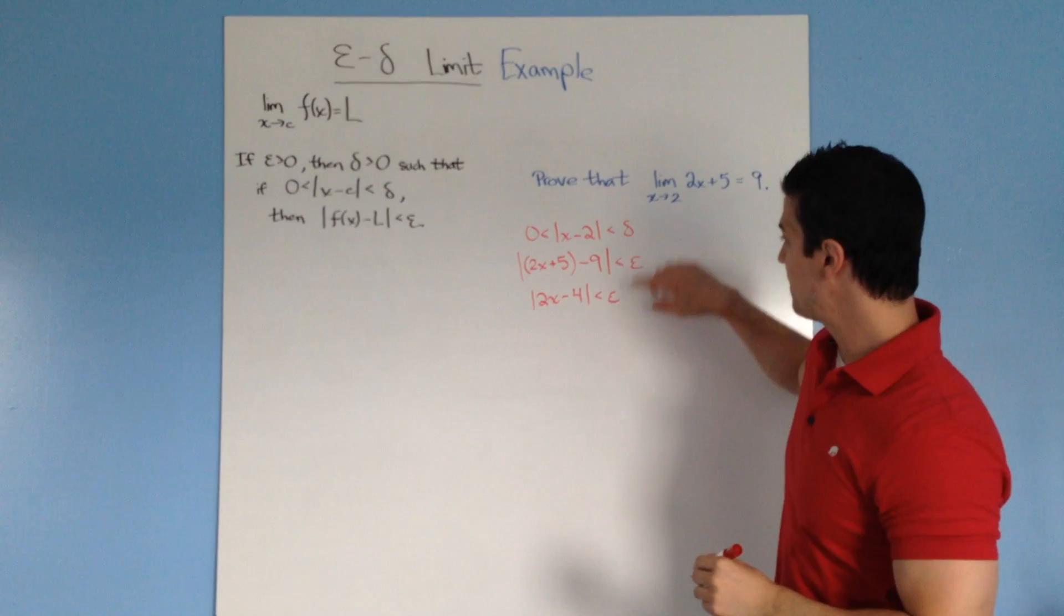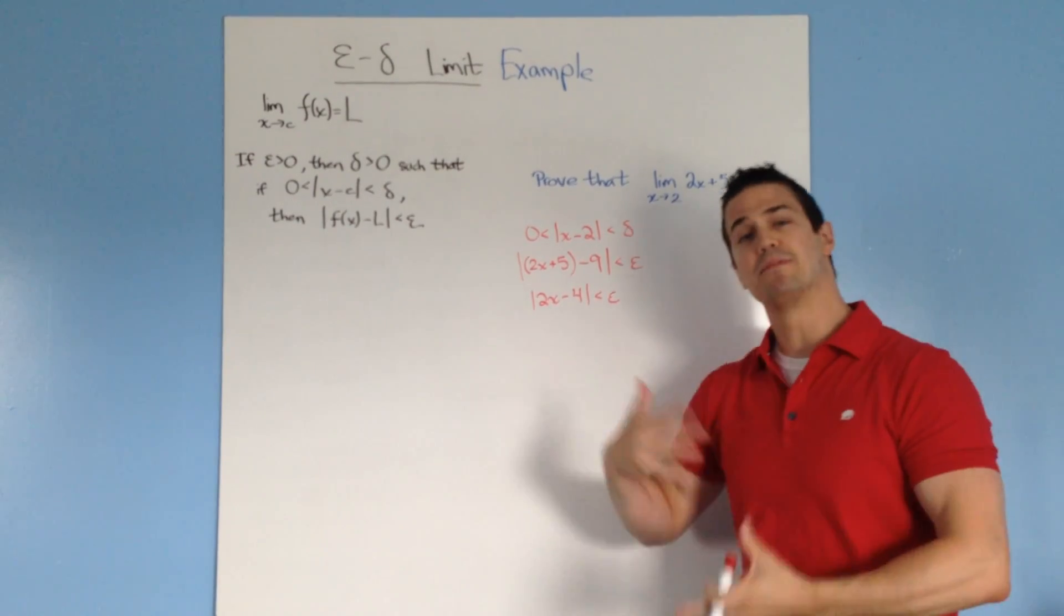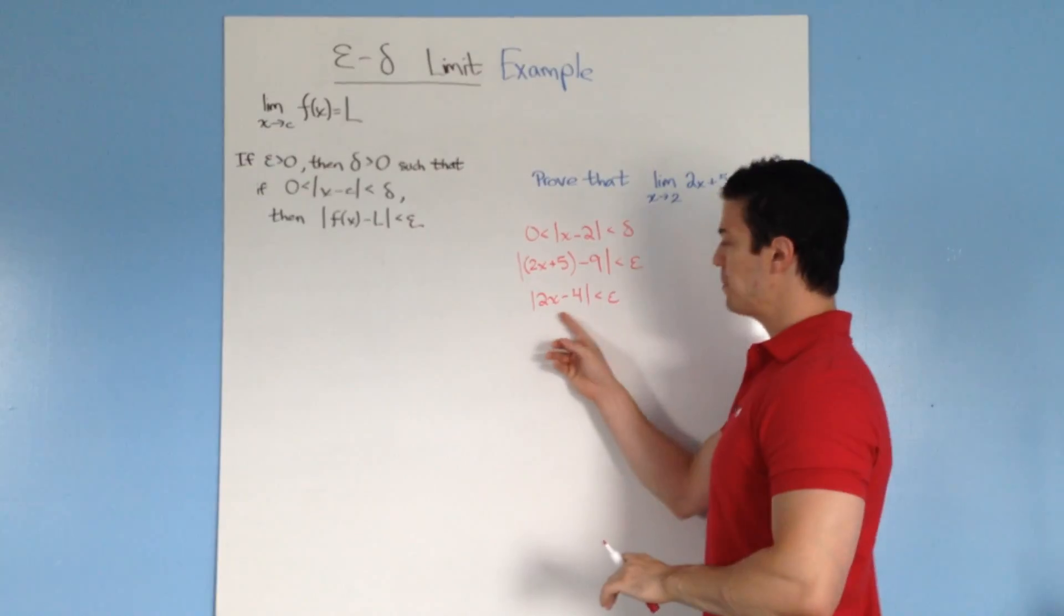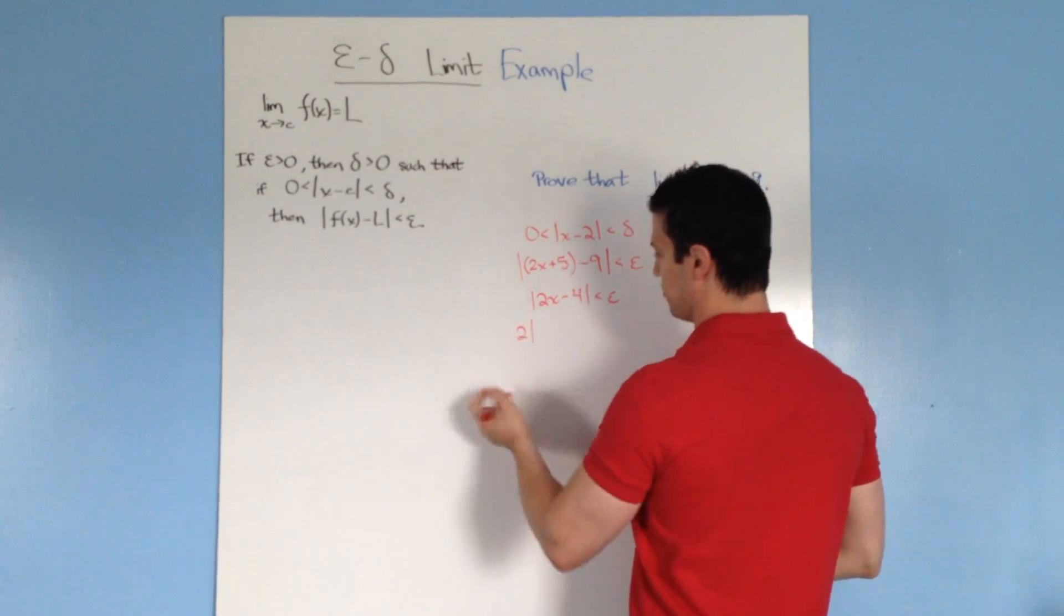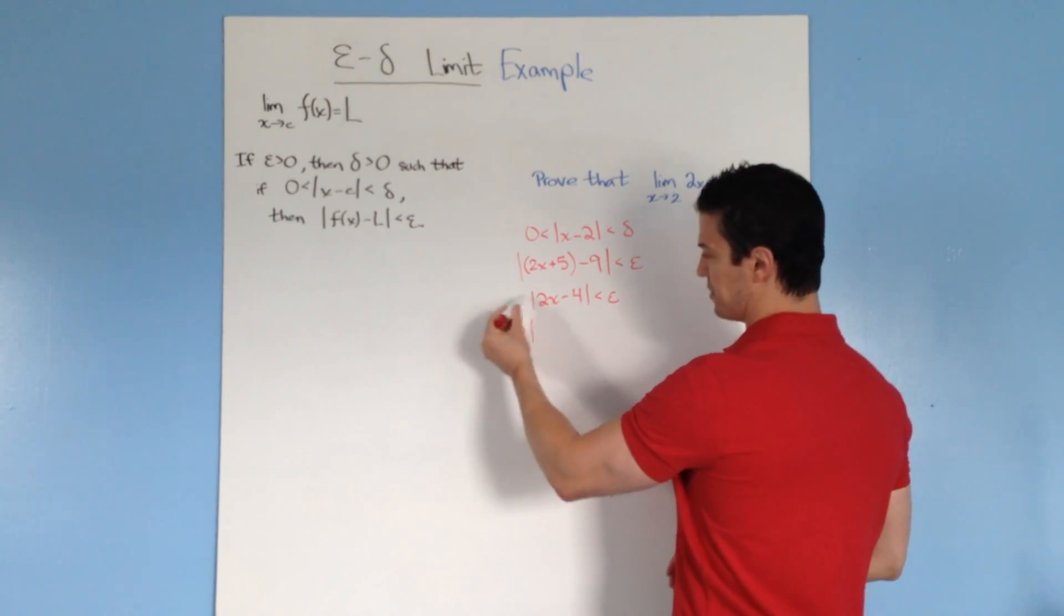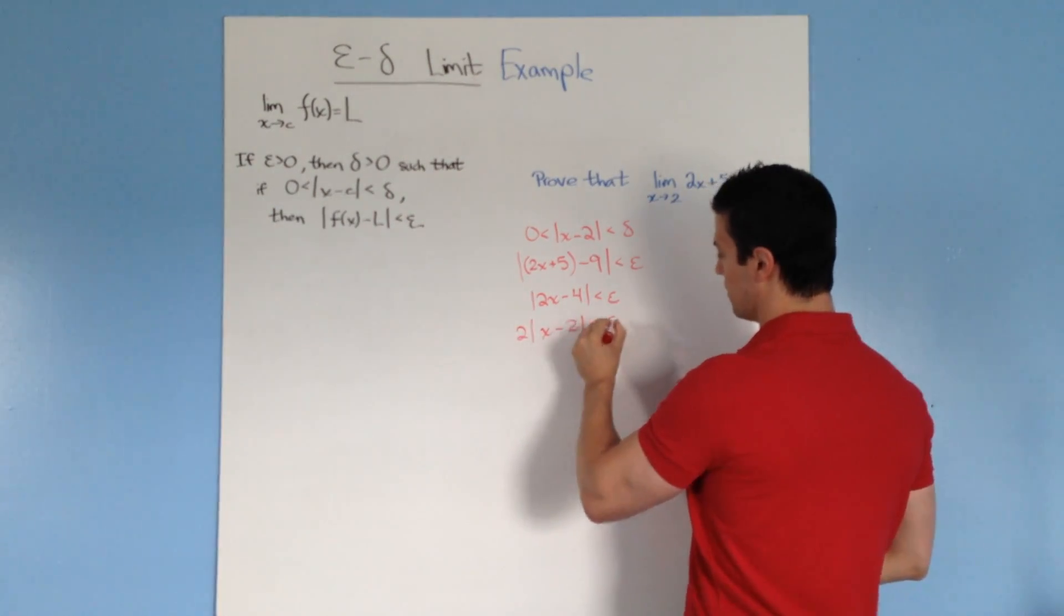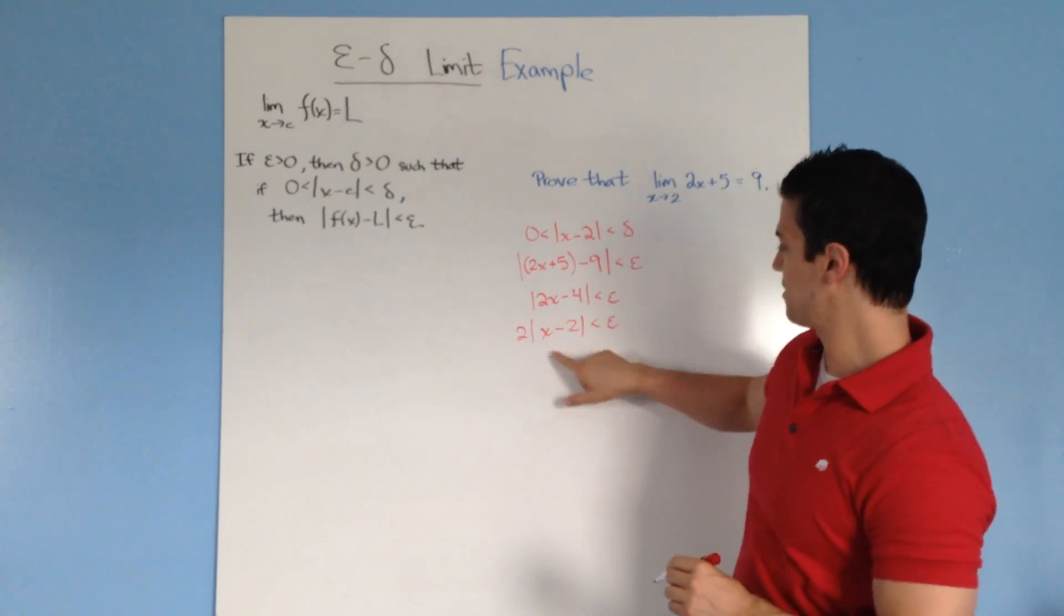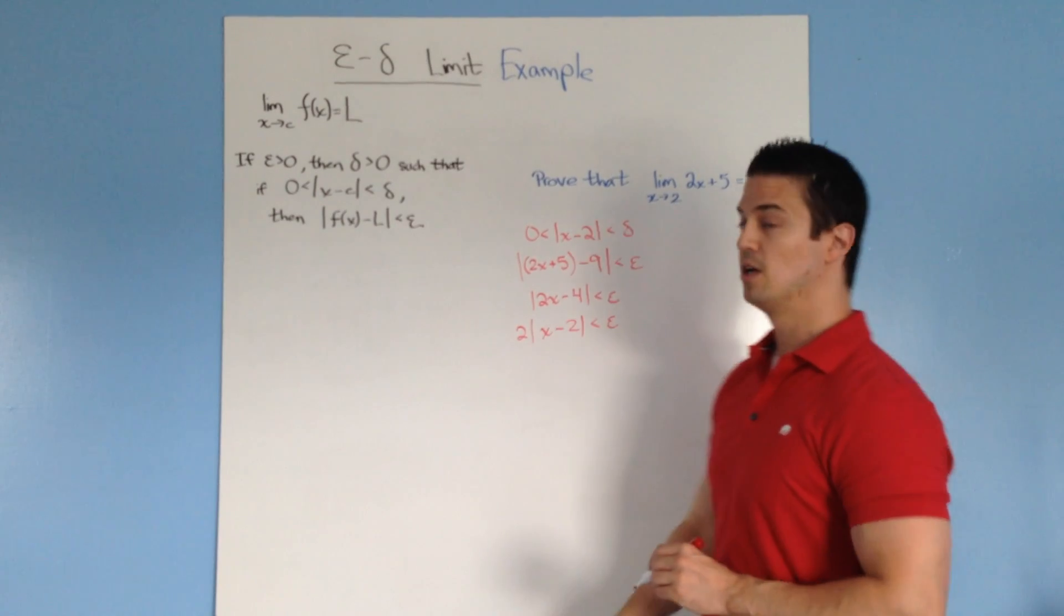Now I want to find the connection between delta and epsilon. You might see it already; if not, keep doing some algebra. First, I'm going to factor out this 2. If you remember your absolute value properties, you can take the 2 out: 2 times the absolute value of x minus 2 is less than epsilon. Now hopefully you can see the connection. There's an x minus 2 here with the epsilon and an x minus 2 with the delta.